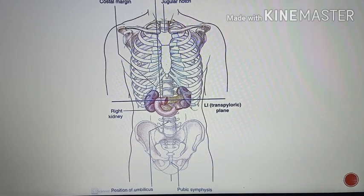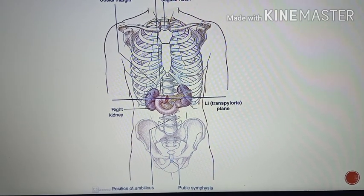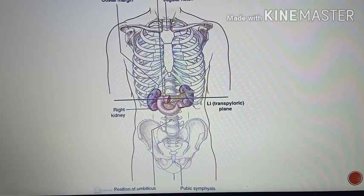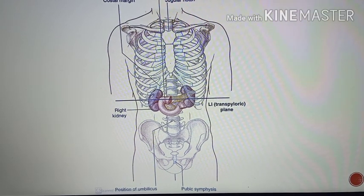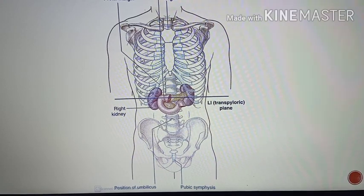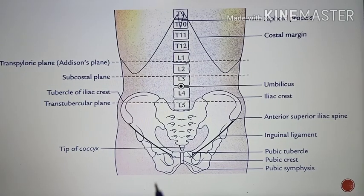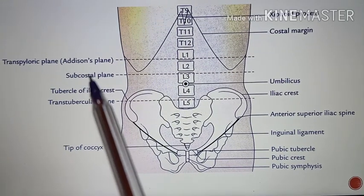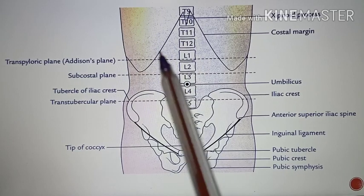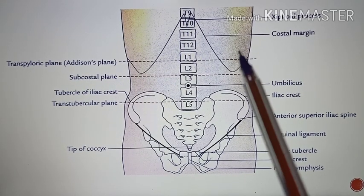It lies at the lower border of L1 vertebra, and it crosses at the tip of the 9th costal cartilage. In this diagram, you can see this is the transpyloric plane.